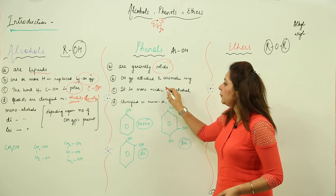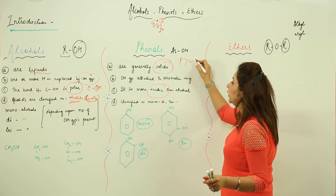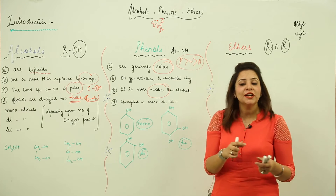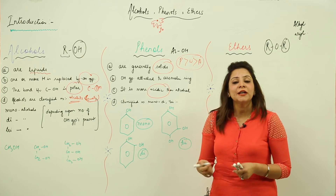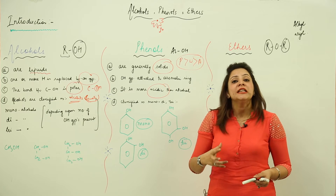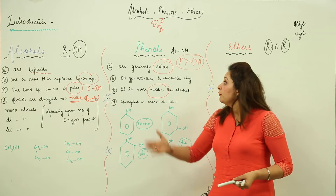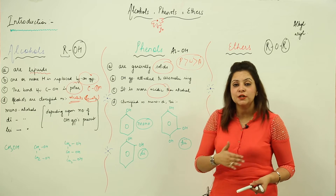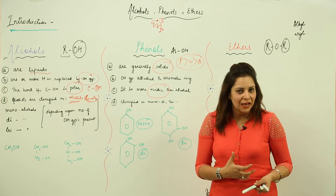If we talk about the acidic nature of phenol, you will be surprised to know that phenol is actually more acidic than water. As I told you, water is more acidic than alcohol. So the order of decreasing acidity is: phenol is the most acidic, then water, then alcohols. Acidic strength is the tendency to liberate a hydrogen ion or hydronium ion.